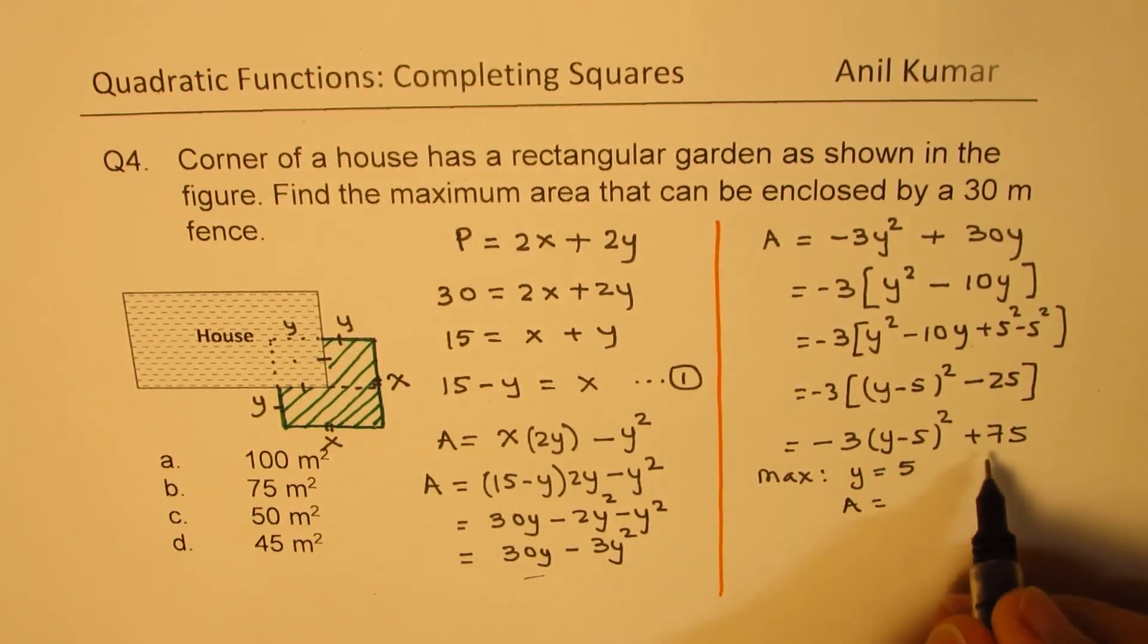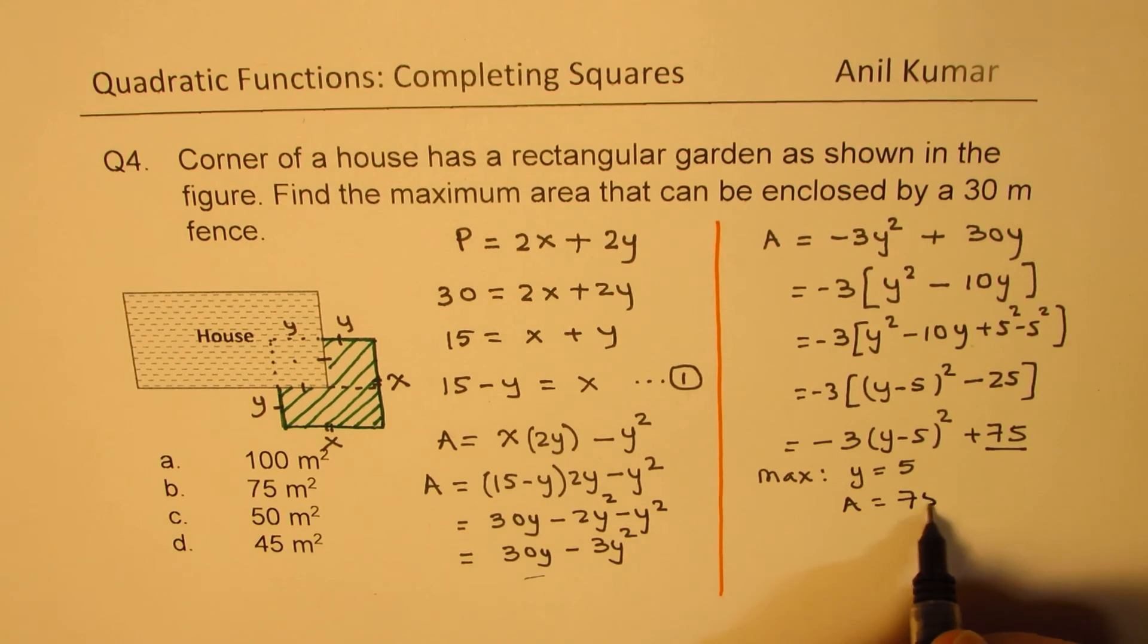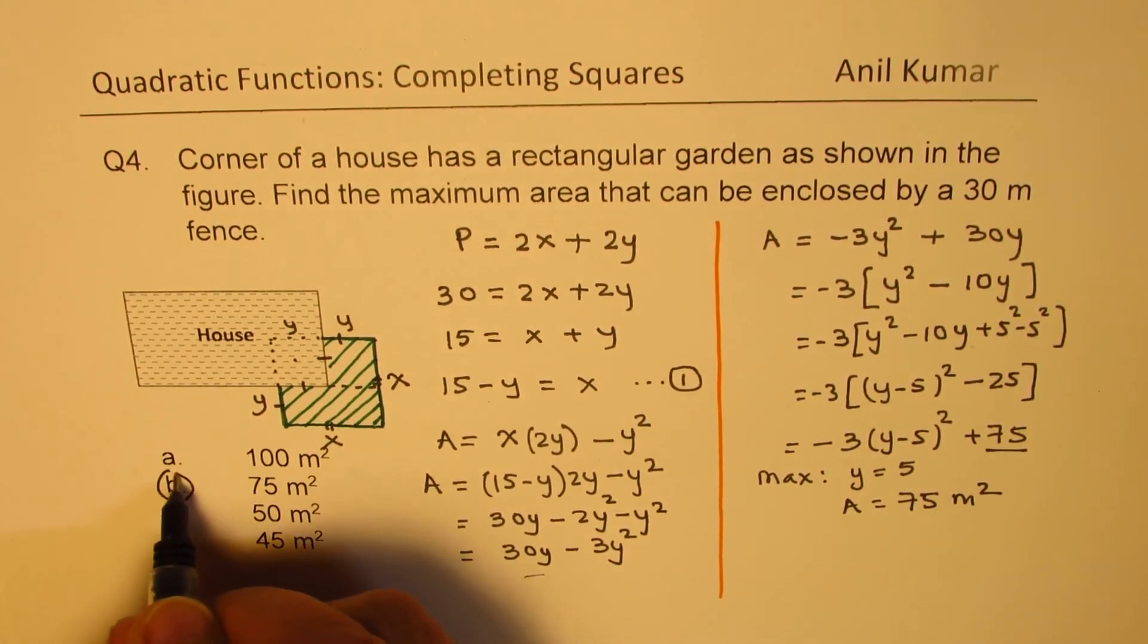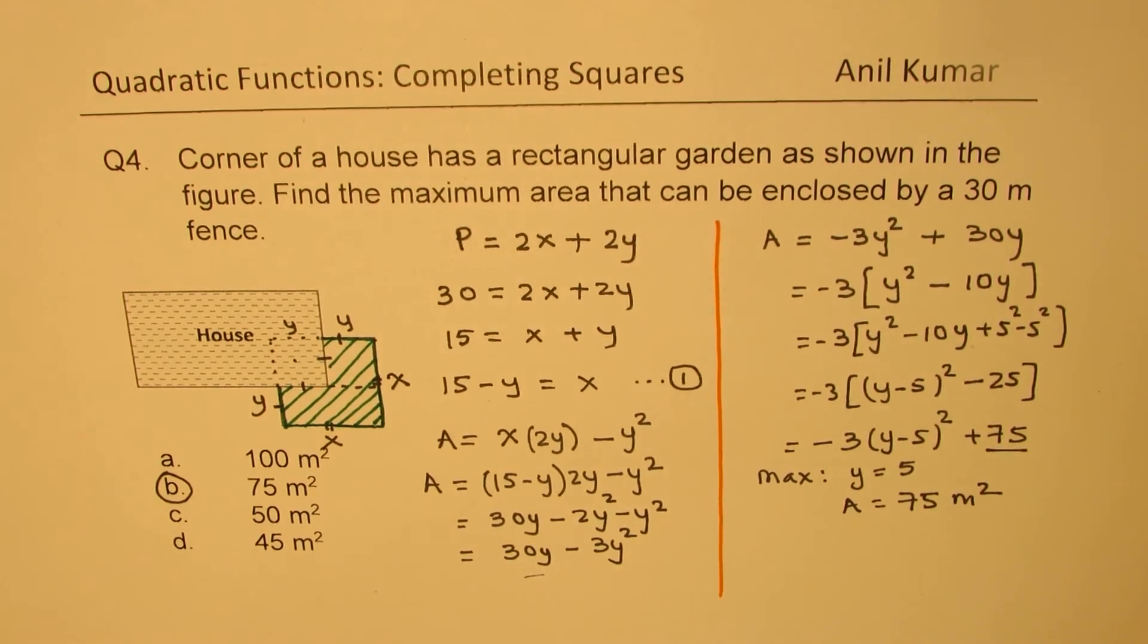For maximum area, we know y should equal 5 and area will be 75 m². Therefore option b is the right option. That is how you could solve this particular question.